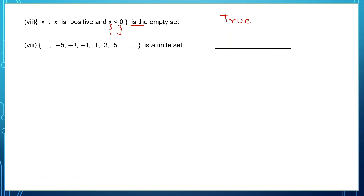Question 8: the dots indicate there are many numbers on this side, and in the second set too there are dots with many numbers. That means it's an infinite set. But the statement says it's a finite set, so this statement is false.